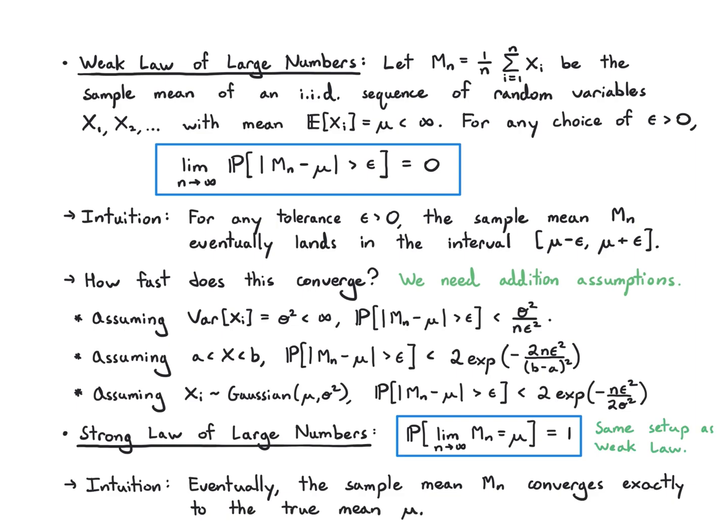And in case you're wondering what the difference is really between this weak law and the strong law, the strong law is telling you that at the very end of this infinite sequence, you'll hit the true mean exactly. The weak law is saying that along the way, you can get a sense of how quickly you're converging to that exact answer by setting up an interval and asking what's the probability that you leave that interval. And that's what I've worked out with these assumptions.